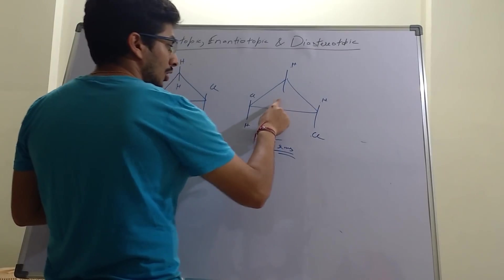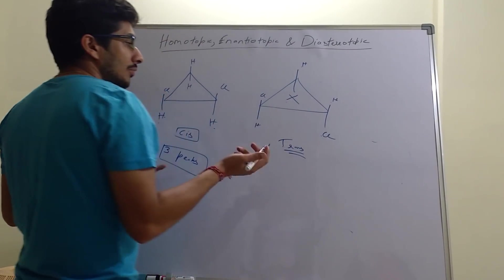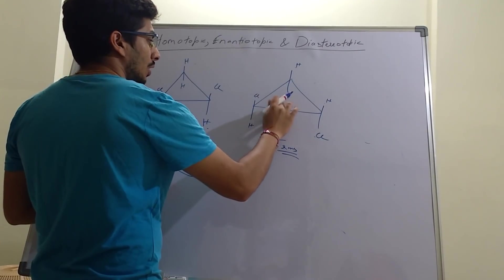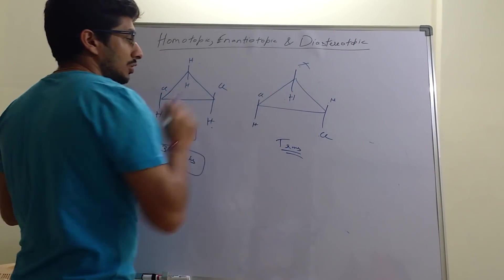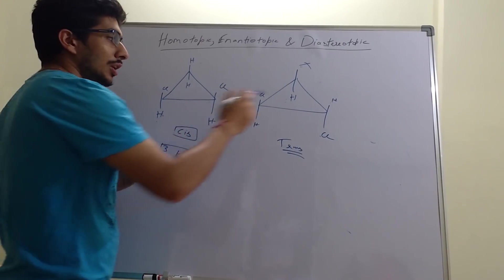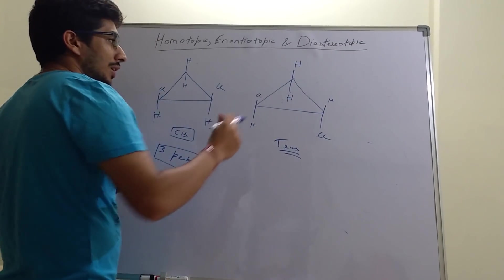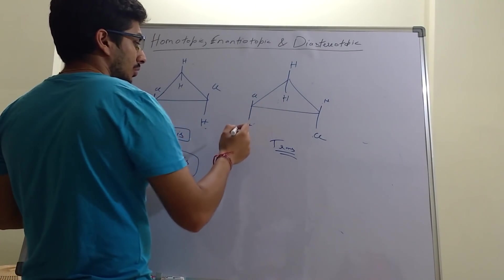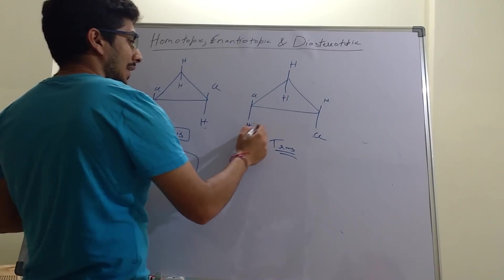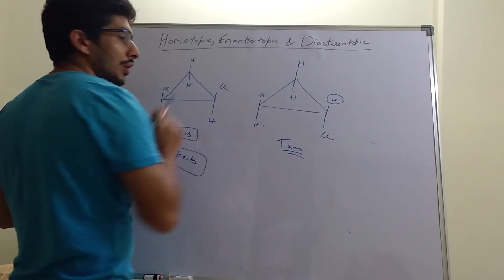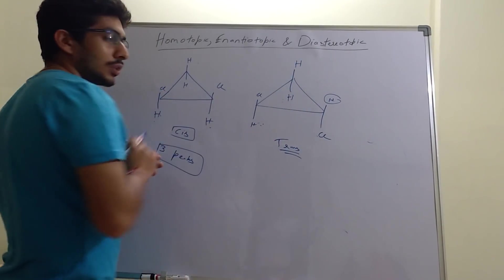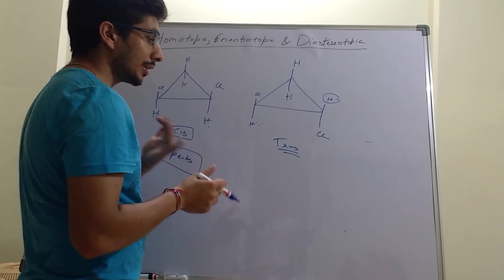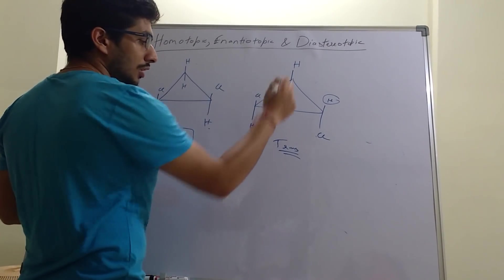Confirming with the substitution test for the trans isomer: replace one hydrogen by X — it is trans with one chlorine and cis with the other. Replace the other hydrogen by X — again cis with one chlorine and trans with the other. The chemical environment is the same, so these two hydrogens give only one peak. Similarly the other pair of hydrogens are also equivalent and give one signal. So the trans isomer gives a total of two NMR peaks.